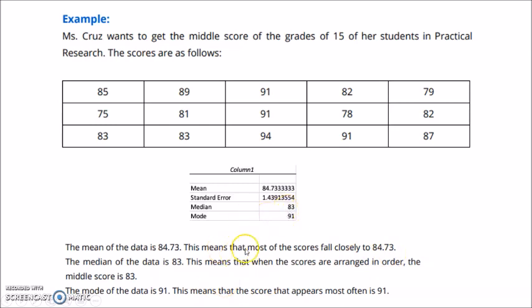The median, 83. So what does it tell us? Median is 83. And this means that when the scores are arranged in order, the middle value or the middle score is 83. The mode of the data is 91. So this means that the score that appears most often is 91. The most frequently appearing score is 91.